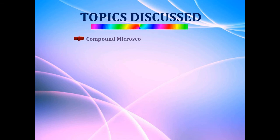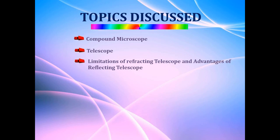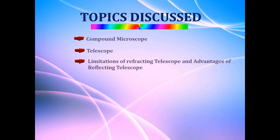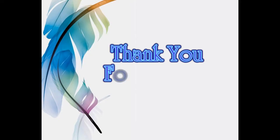In this video we discussed about the compound microscope — the magnification produced by it — then telescopes and types of telescopes, limitations of the refracting type of telescope, and advantages of the reflecting type of telescope. This was all for today, and with this we have reached the end of the Ray Optics and Optical Instruments chapter. If you have any doubts you can WhatsApp me or call me. From the next video we will start solving numericals. Till then, keep studying. Thank you for watching.